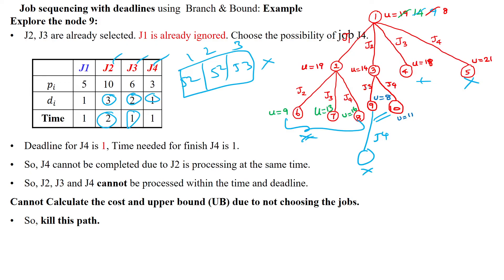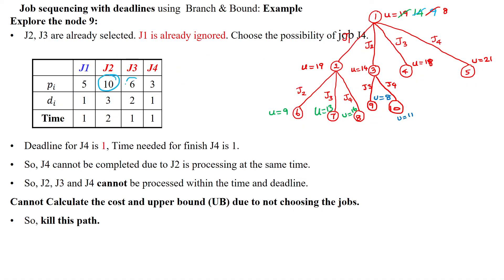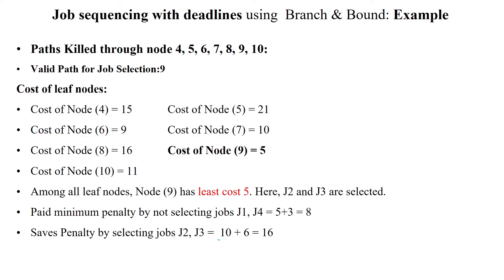The optimal solution is j2 and j3. By selecting j2 and j3, you save 10 + 6 = 16 units of penalty. By leaving jobs j1 and j4, you pay a minimum penalty of 5 + 3 = 8 units. So you maximize the penalty saved while minimizing the cost to 8 units using the branch and bound technique for the job sequencing with deadlines problem. Thanks for watching.